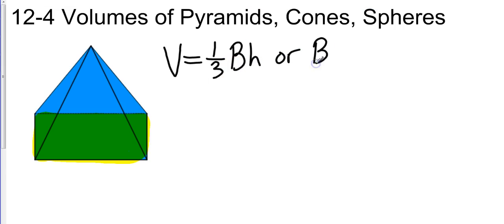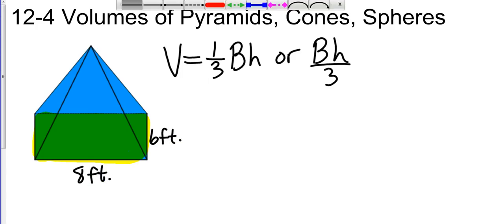Or if you want to write this a little bit different, area of the base times height divided by three. So let's just look at a basic pyramid. Let's say that this is eight feet, let's say this is six feet. Okay, so this has a rectangular base.